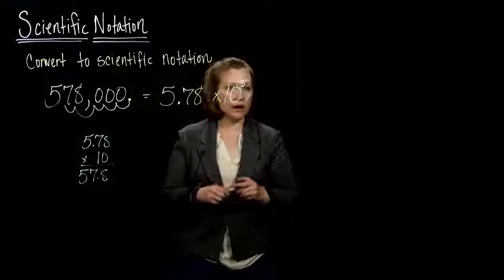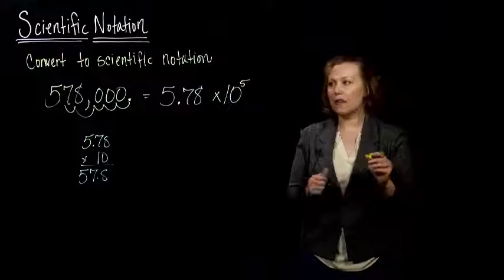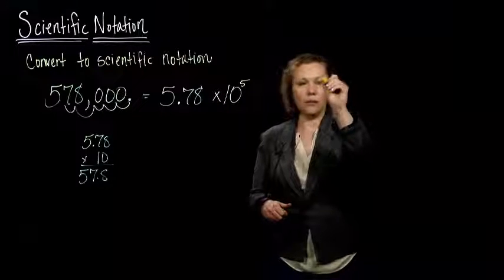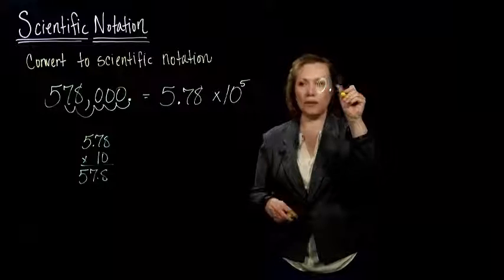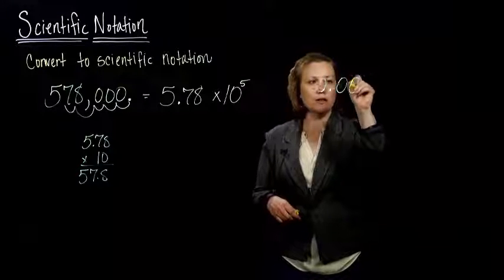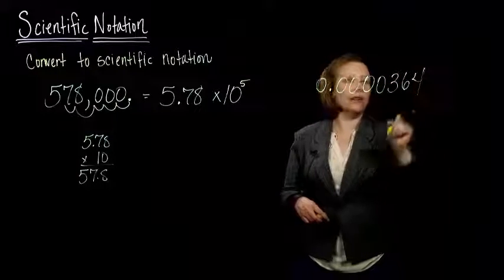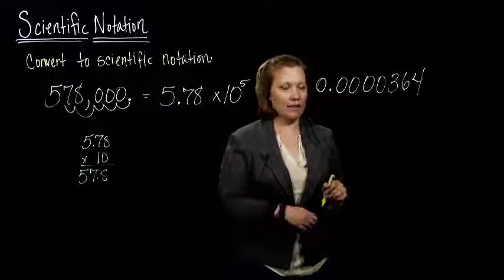So we can try another example. Let's see, let's try a small number. So I've got point, or we can put a zero in front, 0.0000364. And I want to write this guy in scientific notation.